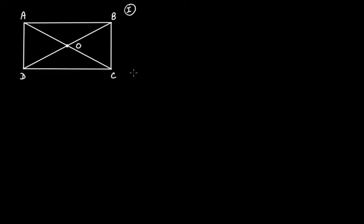First we will look for the proof that the two diagonals bisect each other. Let's take triangle AOB and triangle COD. Now we know that in a rectangle the opposite sides are parallel and equal to each other, so AB is equal to CD and these two are parallel; AD is equal to BC and these two are parallel. Let's name the angles: angle 1, angle 2, angle 3, and angle 4.